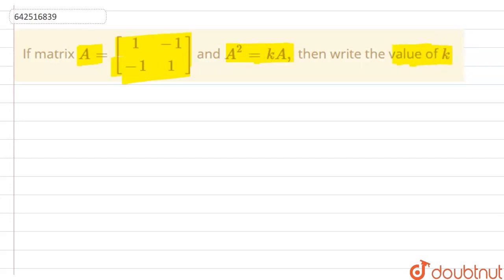So let us first find A squared. What is our A squared? So A squared can be given by the multiplication of A into A. So we can write this as the matrix [1, -1; -1, 1] multiplied by [1, -1; -1, 1].